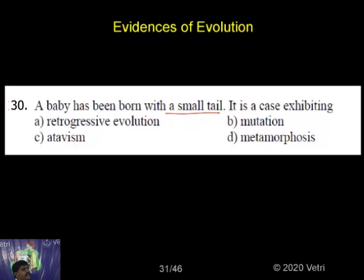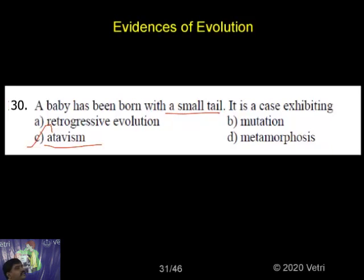So option C is the correct answer. Atavistic organs — the sudden appearance of an atavistic organ in a highly evolved organism is called atavism. For example, the presence of a tail in a human baby is called an atavistic organ. So option C is the correct answer.